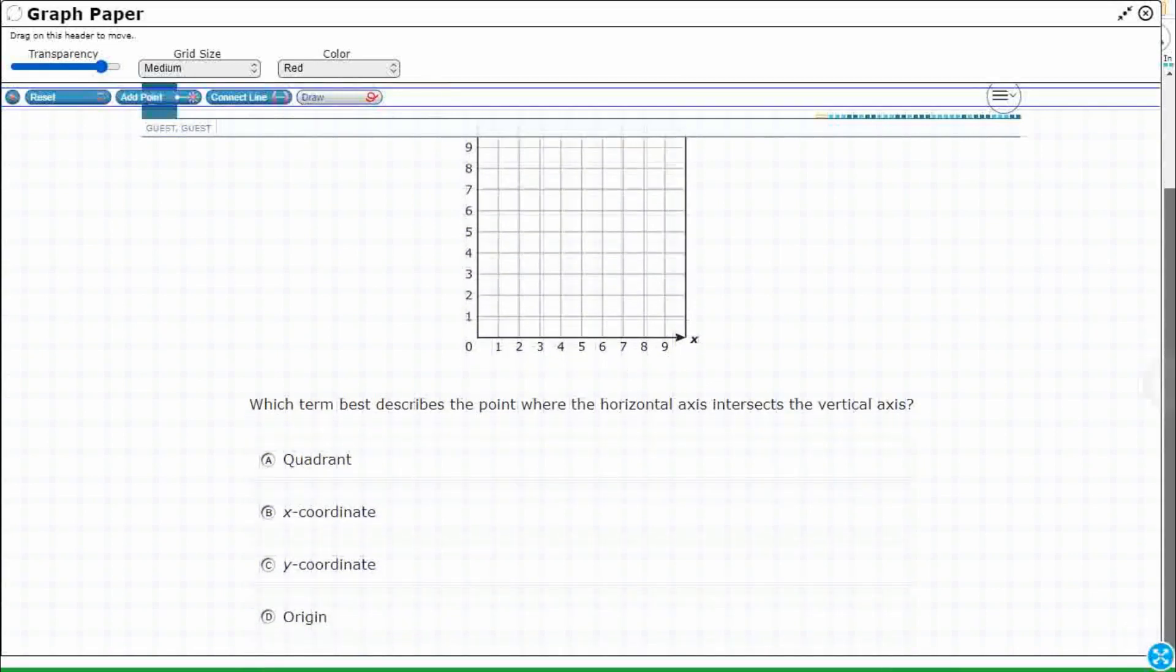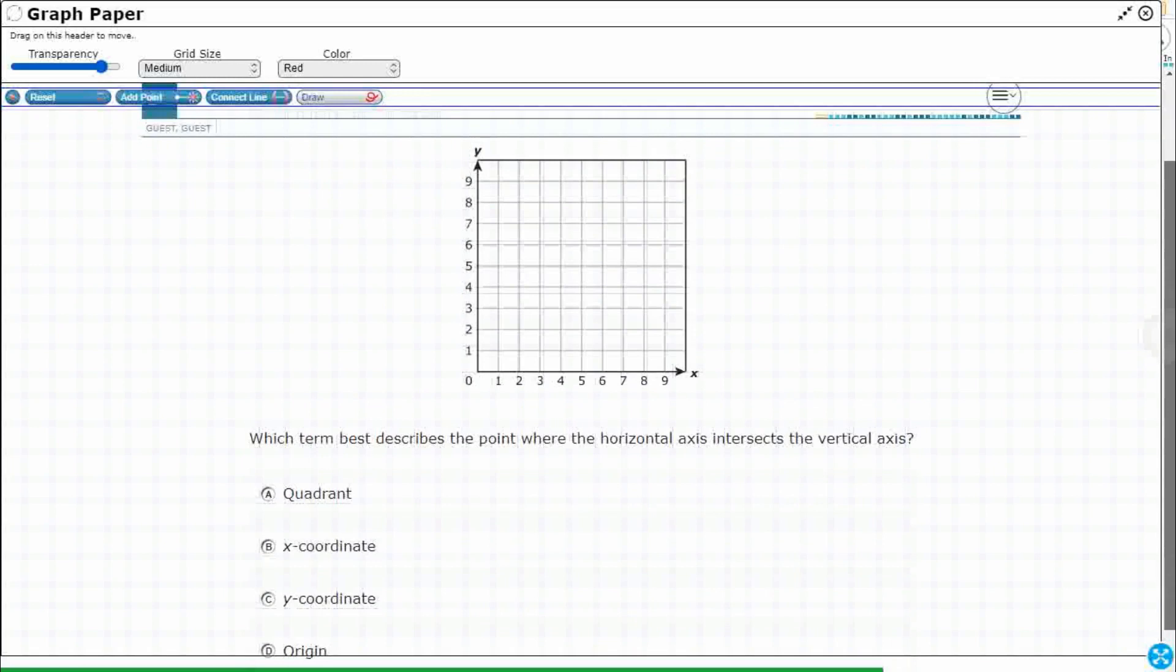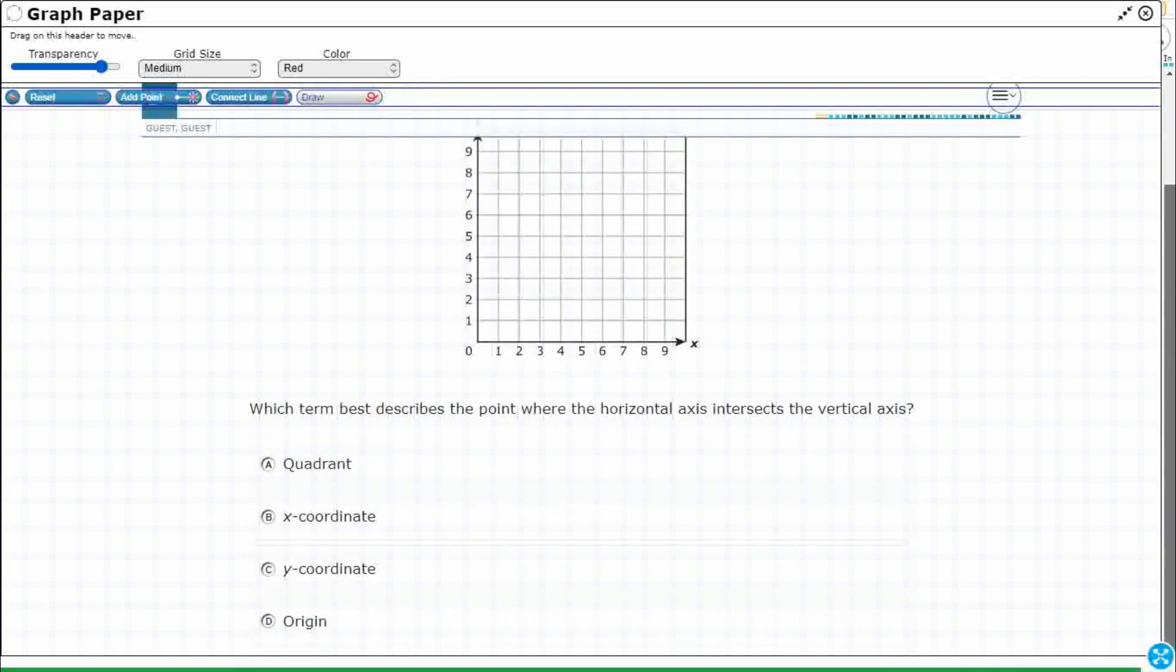Nice thing is you could still kind of scroll off to the side. So which term best describes the point where the horizontal axis intersects the vertical axis? Okay.